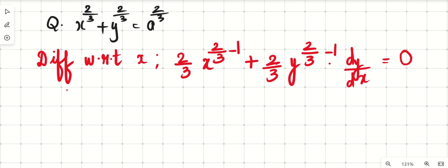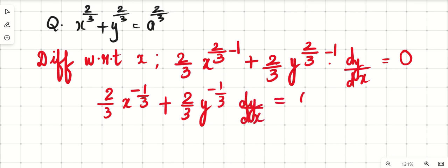So now that is 2 by 3 x raised to minus 1 by 3 plus 2 by 3 y raised to minus 1 by 3 dy by dx is equal to 0.